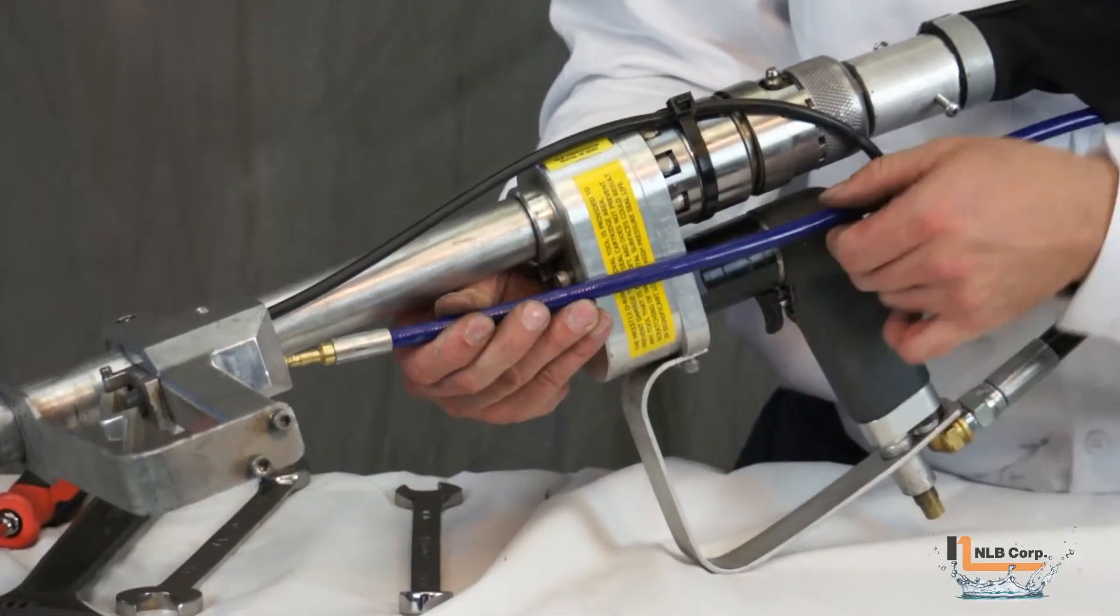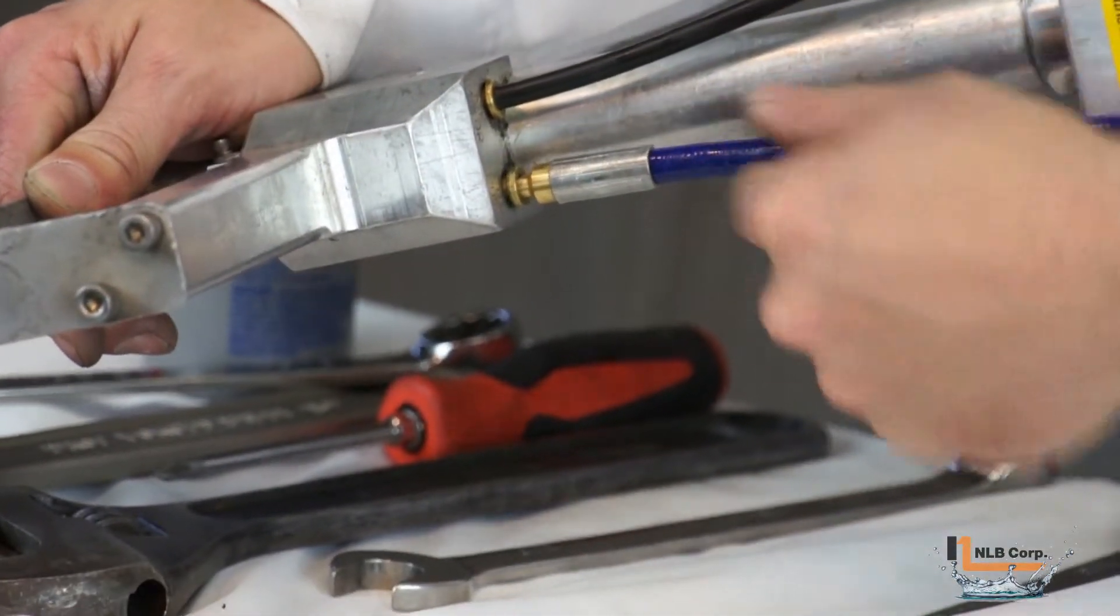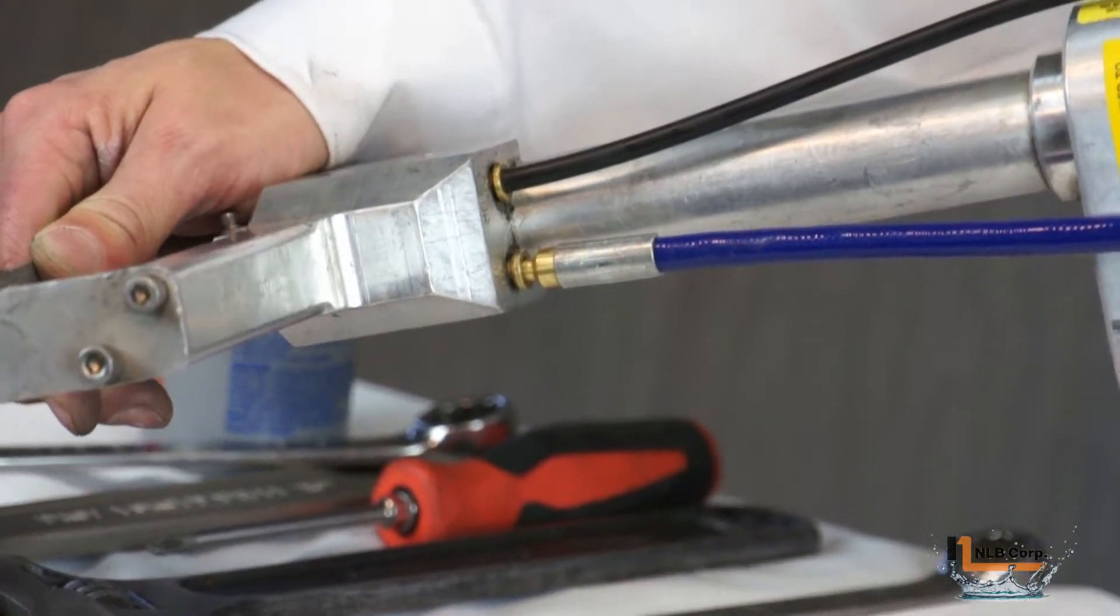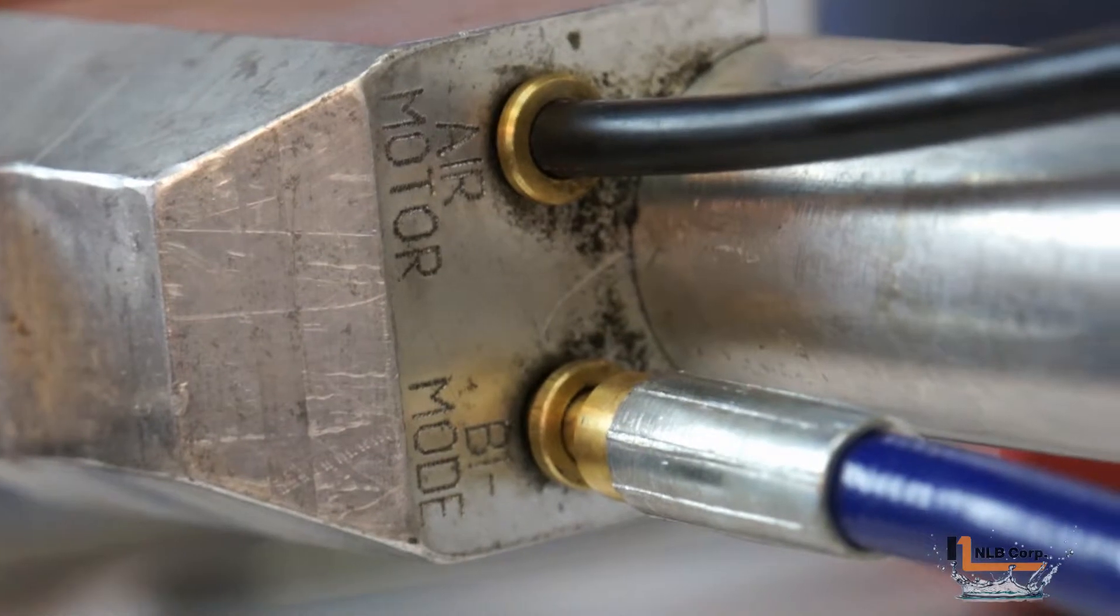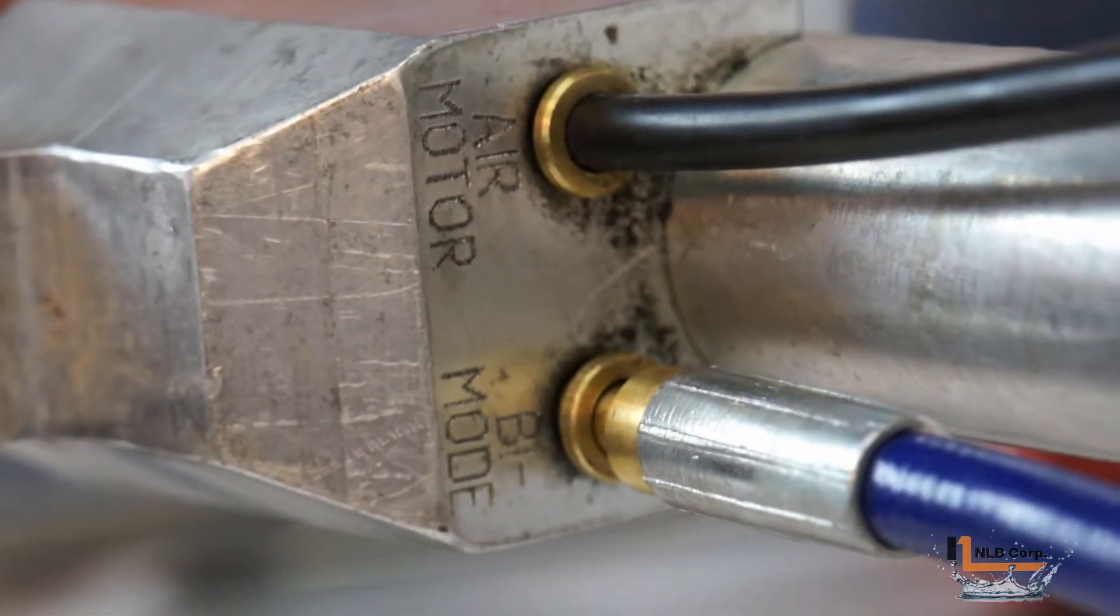Now, attach the air signal line to the front trigger assembly on the hand lance. This is a quick coupling and only requires the air signal line to be pushed into its receptacle. You can give the hose a slight tug to ensure that it is correctly installed. A close inspection of the front trigger assembly shows the labels that designate the two ports.